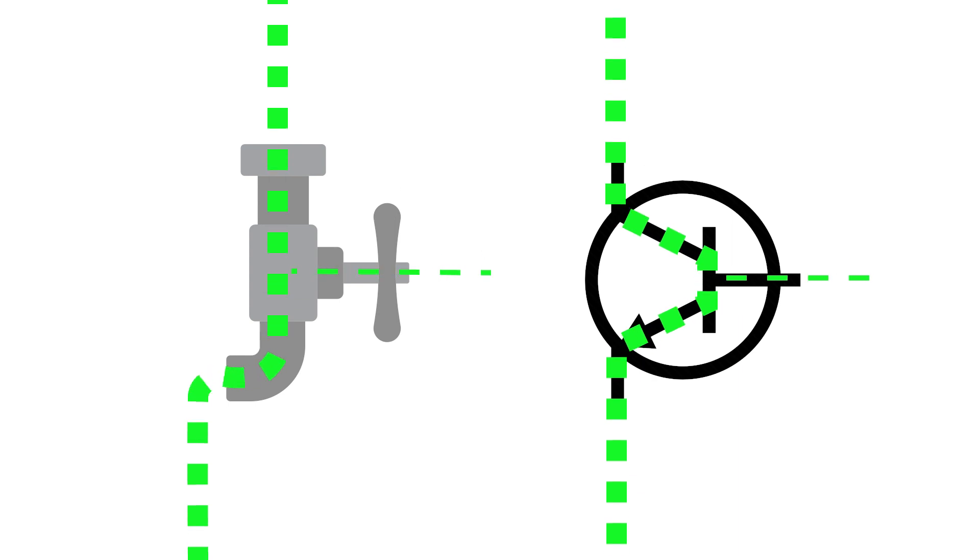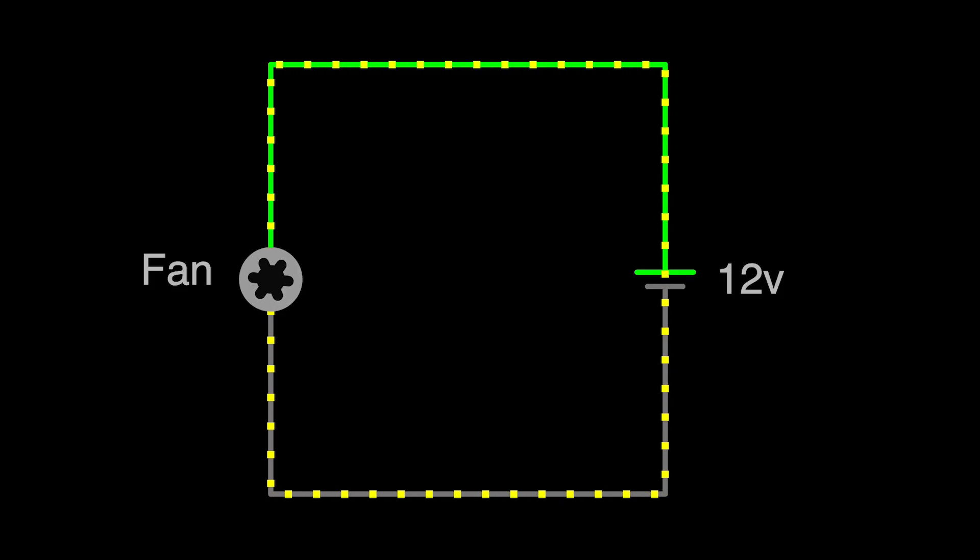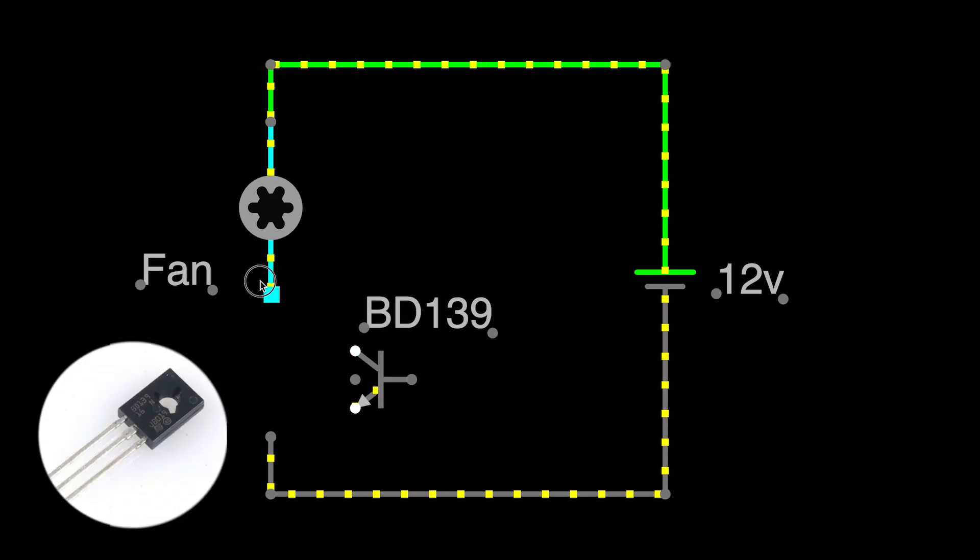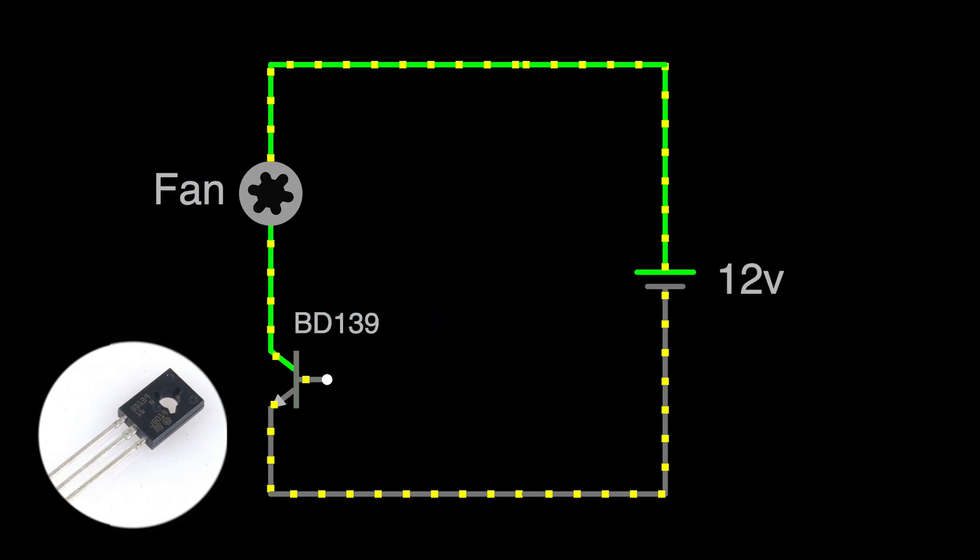So let's look at how we can use a transistor to control the fan speed. This circuit is showing a fan being powered by a 12 volt power supply running at full speed. We're going to add the transistor after the fan in the circuit. No current can flow through the transistor. It's like a closed tap until we apply a voltage to the base.